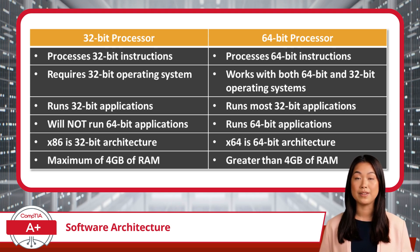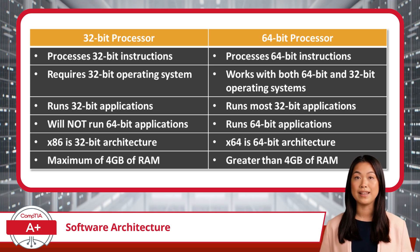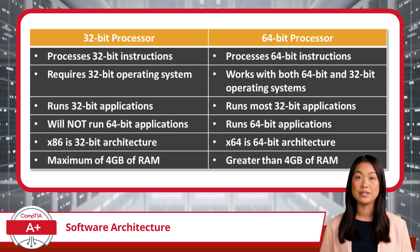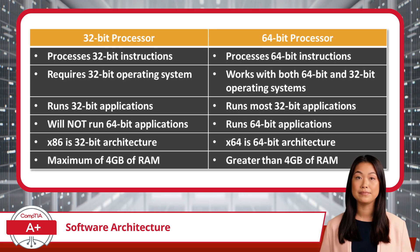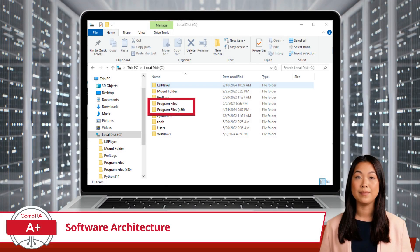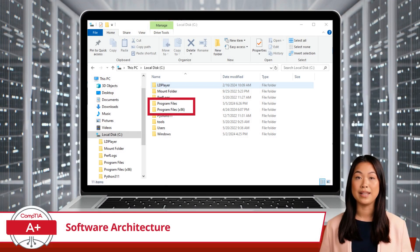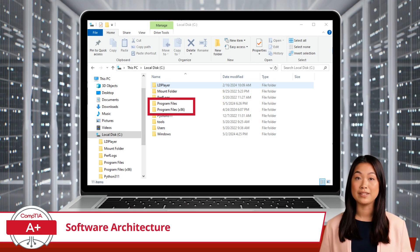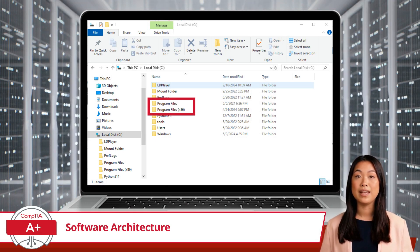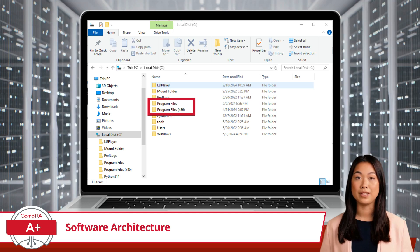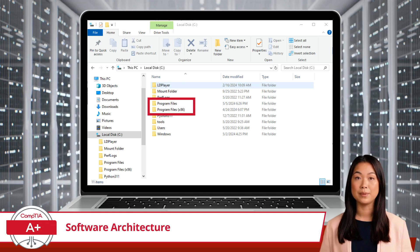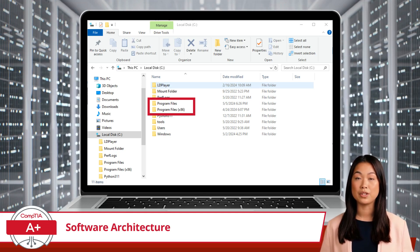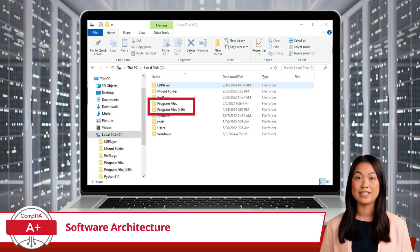While this number might seem arbitrary, it is a good idea to commit this to memory. As for 64-bit systems, they also have a limit, but the number is super large and not a real concern. Now, let's talk about how Windows stores software applications, based on whether they are 32-bit or 64-bit. Windows uses two separate directories for this purpose, to ensure compatibility and organization.